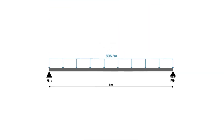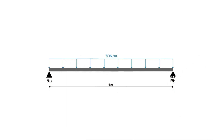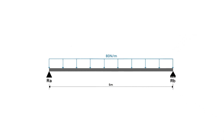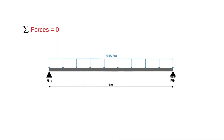If we look at the beam we can see that it is 5 metres in length and has supports at either end labelled RA and RB. It has a uniformly distributed load of 80 newtons per metre applied across the whole beam. As the beam is stationary the forces acting on it must cancel out and it is said to be in equilibrium.